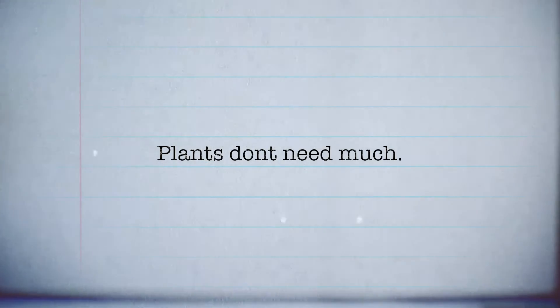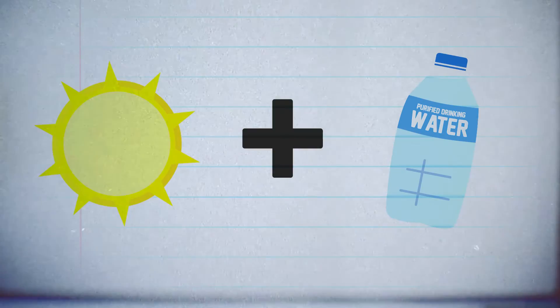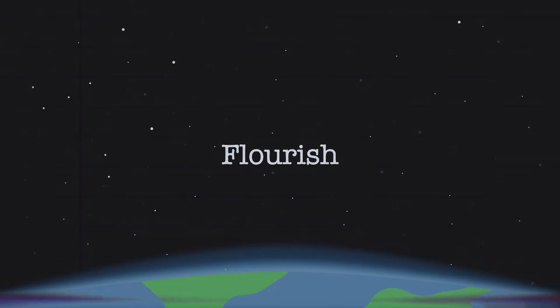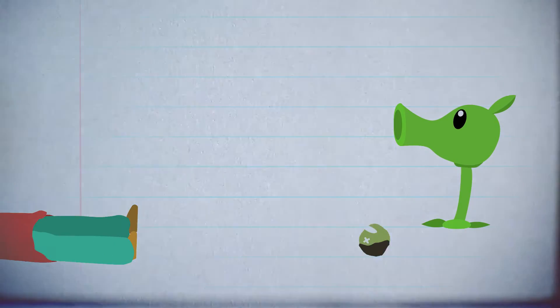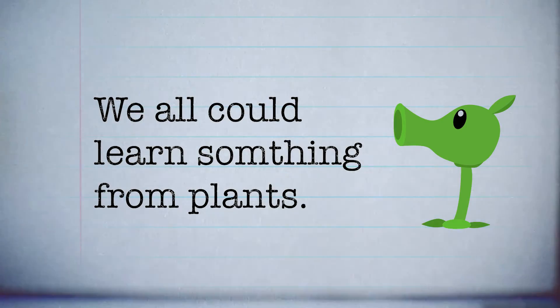The Plantae Kingdom is the perfect example of minimalism. Plants don't need much. Soil for growth, sunlight and water for nourishment, and some space to flourish. They aren't greedy. But like any other living thing, they will fight to survive when food and space are scarce. We all could learn something from plants.